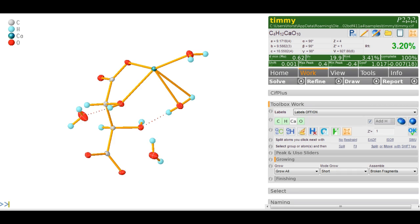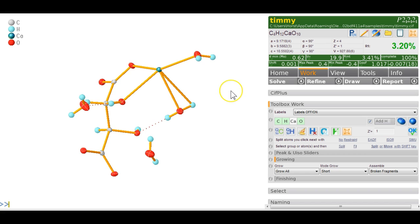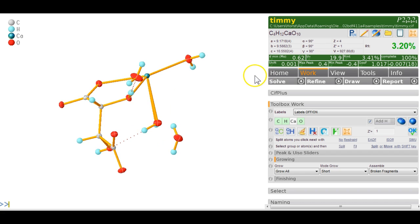In this video I'd like to show you how you can modify the asymmetric unit of your structure. Here we've got a structure called Timmy, because I collected it with the son of a very good friend. It's actually calcium tartrate out of a bottle of red wine.